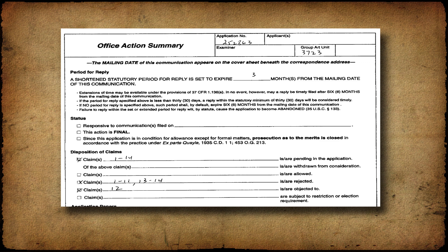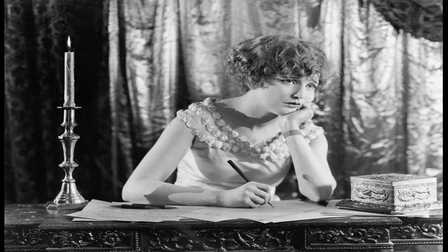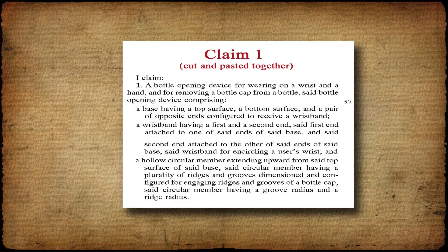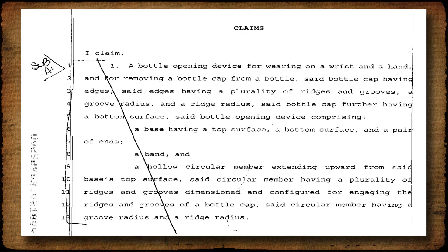If the patent office rejects the applicant's claim, the applicant can amend the claim or simply argue that the examiner's opinion is misguided. It is in this response to the patent office that the file history estoppel issues get created. Recall the claim that eventually was issued — this is not the claim that was originally filed. Here is the claim that was originally filed. Note the word 'band' in the claim — this will get amended by the applicant later. The handwriting on this is done by the patent examiner, and indicates that this claim was rejected or withdrawn.